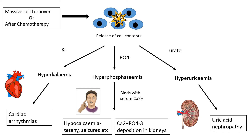Tumour lysis occurs in certain high-risk tumours when there's a massive cell turnover, or more commonly after chemotherapy, and it happens because those cells are burst open and the intracellular contents are released into the serum in large amounts. Potassium is leaked out from the cells — remember it's an intracellular electrolyte — causing a rise in serum potassium, leading to cardiac arrhythmias and potentially death.